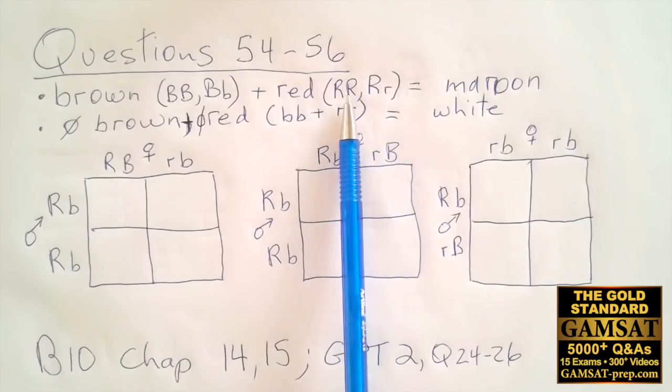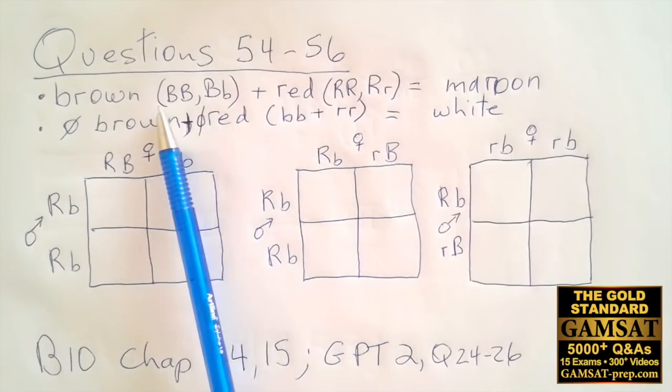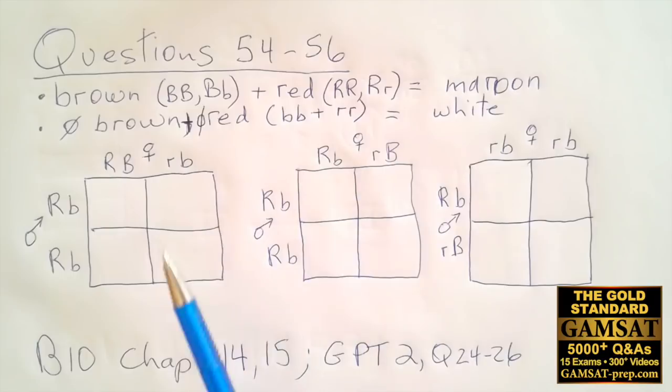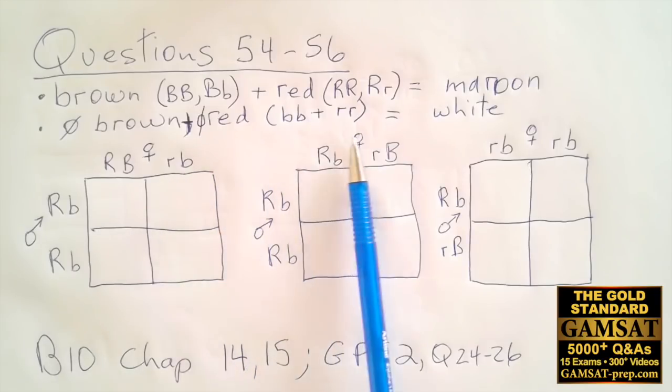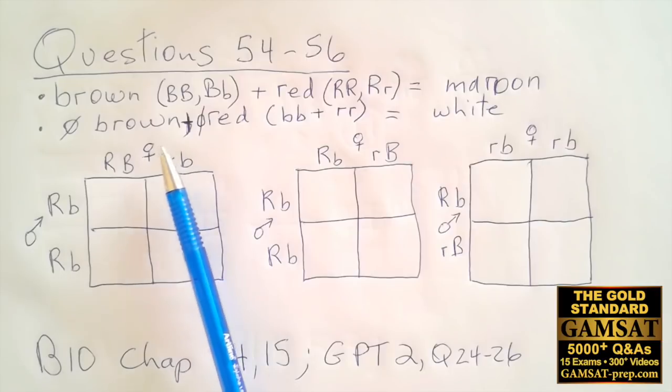Either way that would express red. And if you have both brown and red together, then you will have maroon. If you have no brown, that's bb. If you have no red, that's rr. And if you have both no brown and no red, then you would express the phenotype as white eyes.